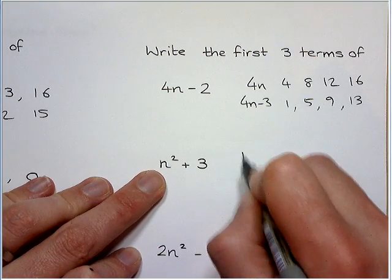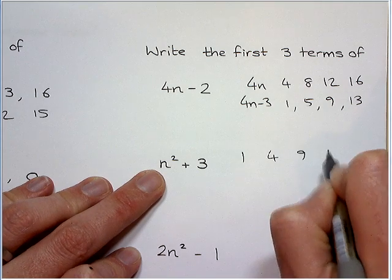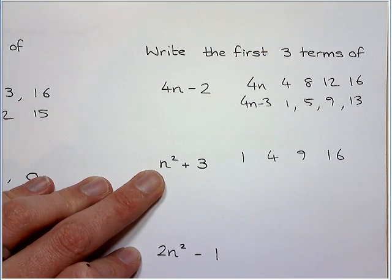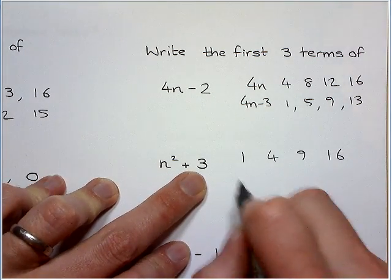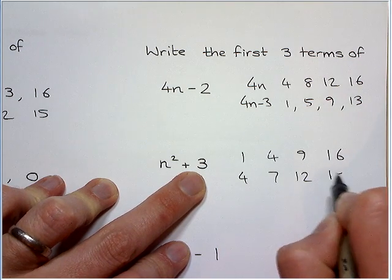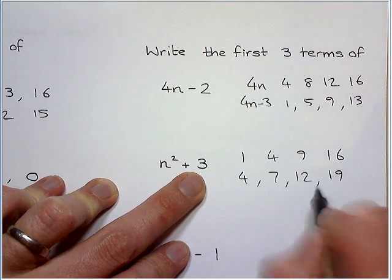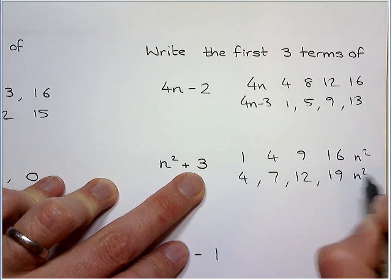n squared means your squared numbers times table. So 1, 4, 9, 16. I did 4 there, it only asked for 3. Add 3 to it. So that's your n squared, that's your n squared plus 3.